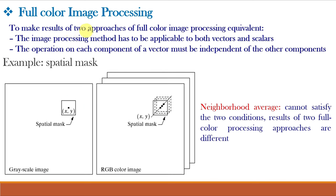To make the results of two approaches of full color image processing, i.e. per color component or plane processing and vector based processing, equivalent, two conditions must be satisfied. Number one, the image processing method has to be applicable to both vectors and scalars. And number two, the operation on each component of a vector must be independent of the other components.